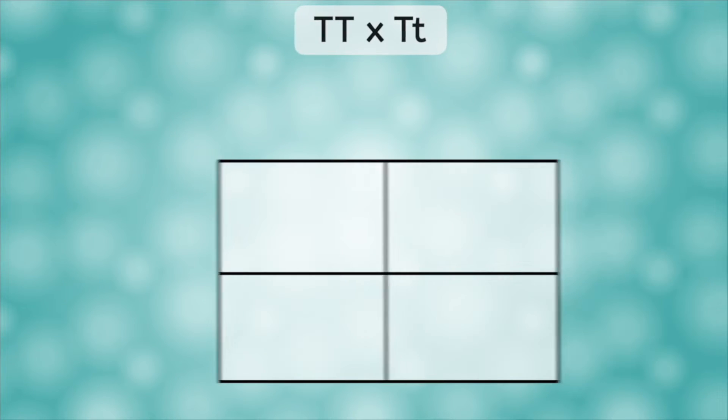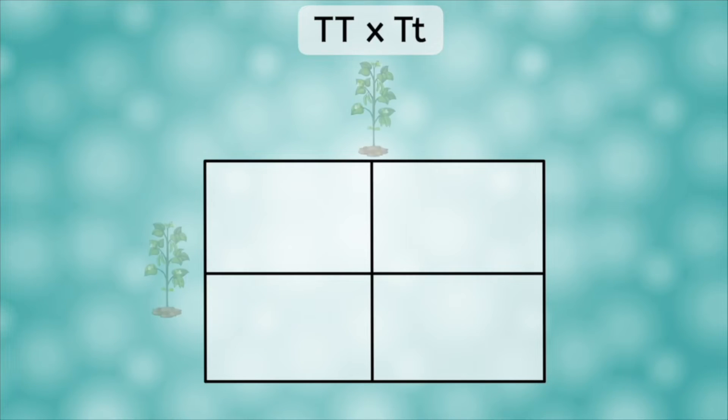To make the Punnett square, we'll put the two parents, big T, big T, and big T, little t, at the top and left. Our strategy to fill in boxes is simple, look up and look left. So we get big T, big T, big T, another big T, big T, then big T, little t, and another big T, little t.